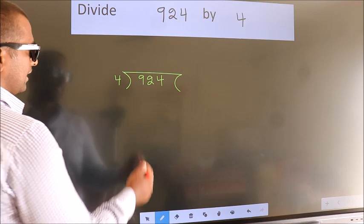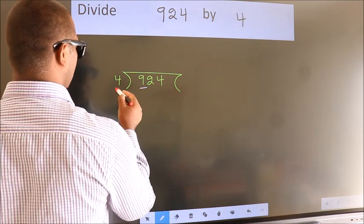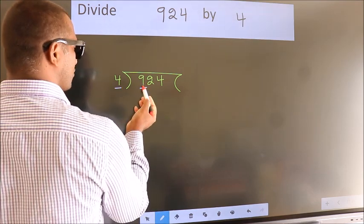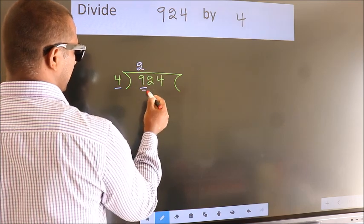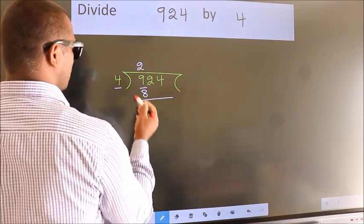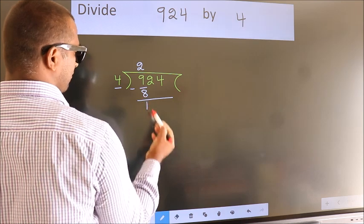Next. Here we have 9, here 4. A number close to 9 in 4 table is 4 twos, 8. Now, we should subtract. We get 1.